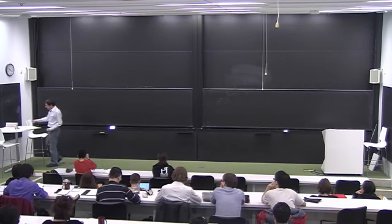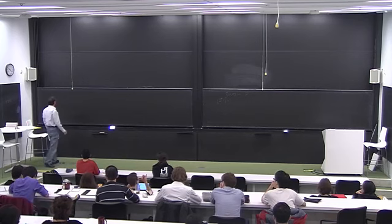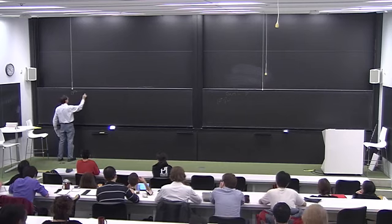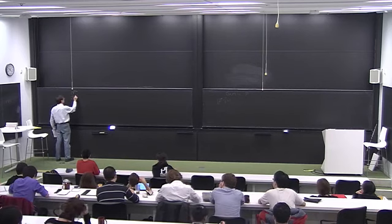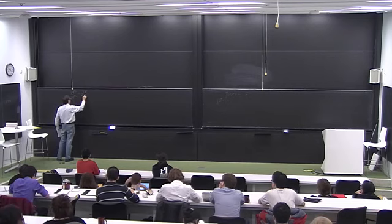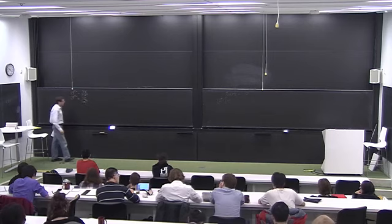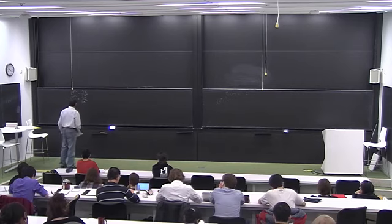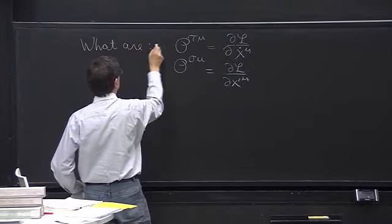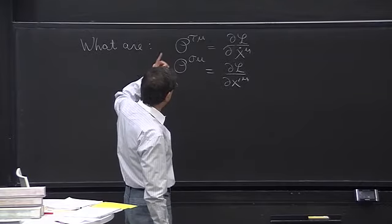Let's go back to something that has been showing up throughout. We have these symbols p^τ_μ and p^σ_μ, defined as dL/dx-dot^μ and dL/dx'^μ, and they were very crucial for all our analysis. What are these things, apart from being defined this way, and what did we learn from them?